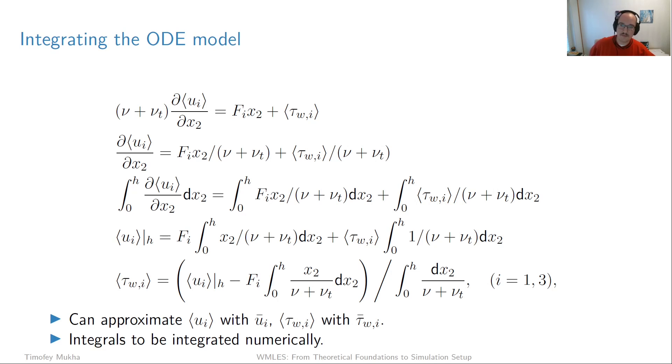After some simple manipulations, we get this expression for the wall stress components. We're not completely done since we still have these integrals, but they can be computed numerically. What you do is introduce some 1D grid for each wall face between 0 and h, and use that with your favorite numerical integration method—the simplest can be trapezoidal or Simpson's method. The whole thing is written for mean quantities, but what we're interested in is the filtered wall shear stress based on filtered velocity. We can approximate the mean quantities with the filtered ones—that is what is typically done.